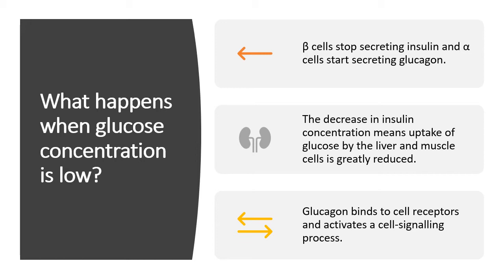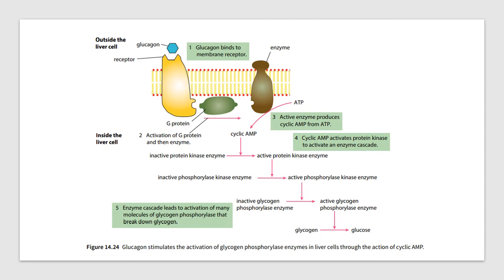The uptake of glucose by the liver and muscle cells decreases when glucagon is being secreted. Glucagon binds to cell receptors just like insulin and activates a cell signaling process — we already discussed cell signaling in chapter 4. Looking at the schematic from the textbook: outside the liver cells, glucagon binds to a receptor on the cell membrane surface, which leads to activation of a G protein. The G protein activates an enzyme that produces cyclic AMP from ATP. Cyclic AMP then results in an enzyme cascade, ending in glycogen being broken down to glucose. This would make a very good five-mark question.